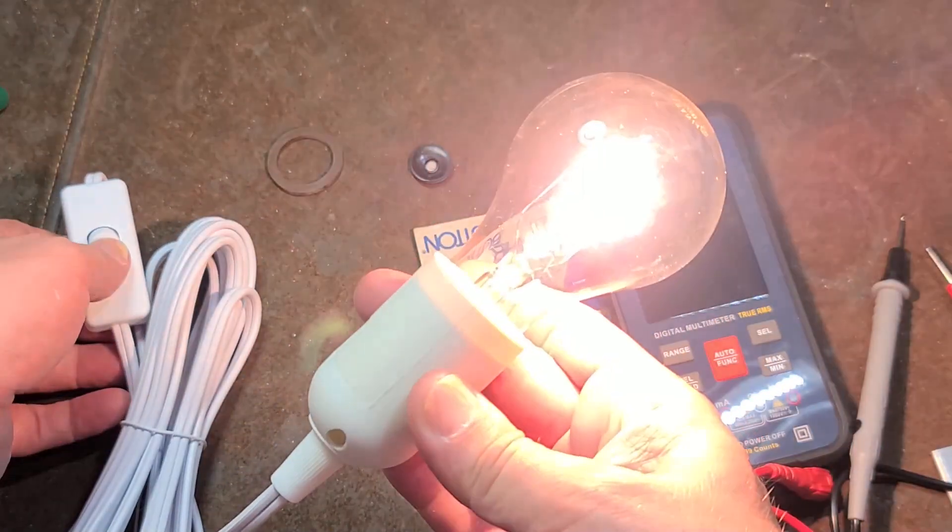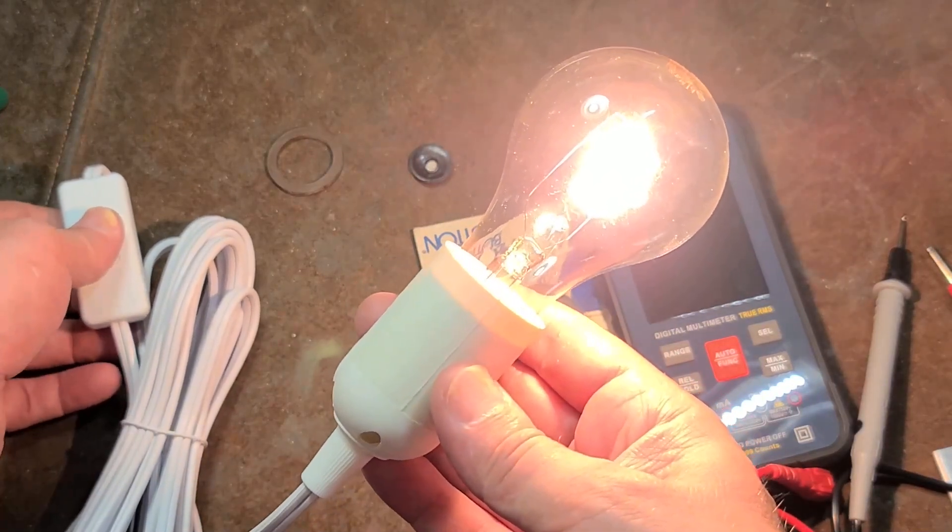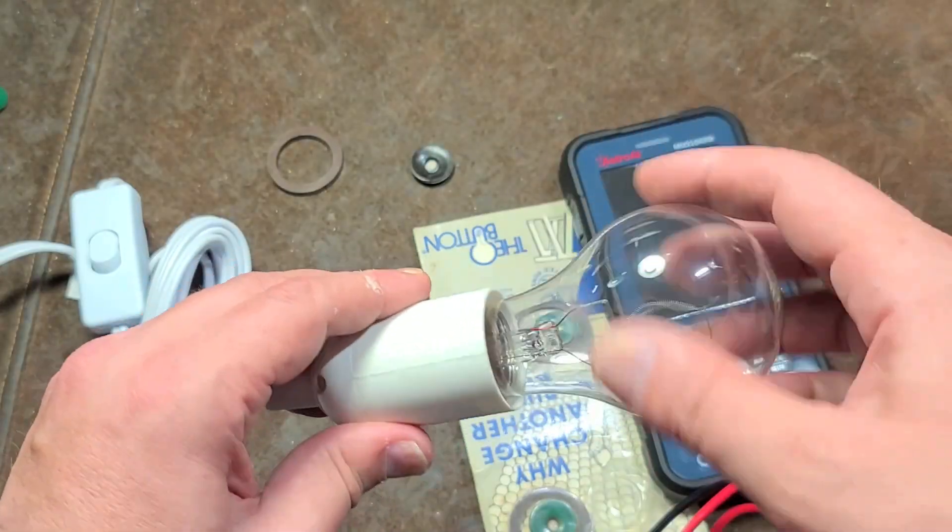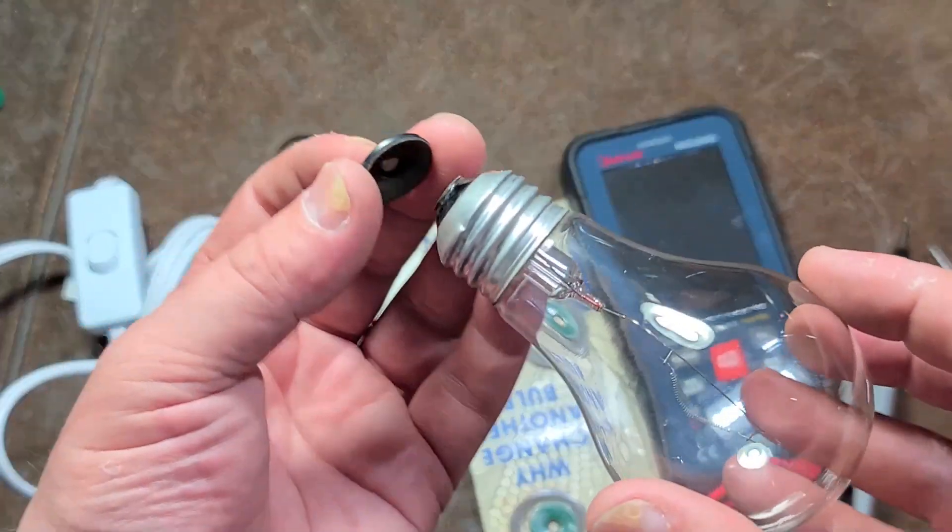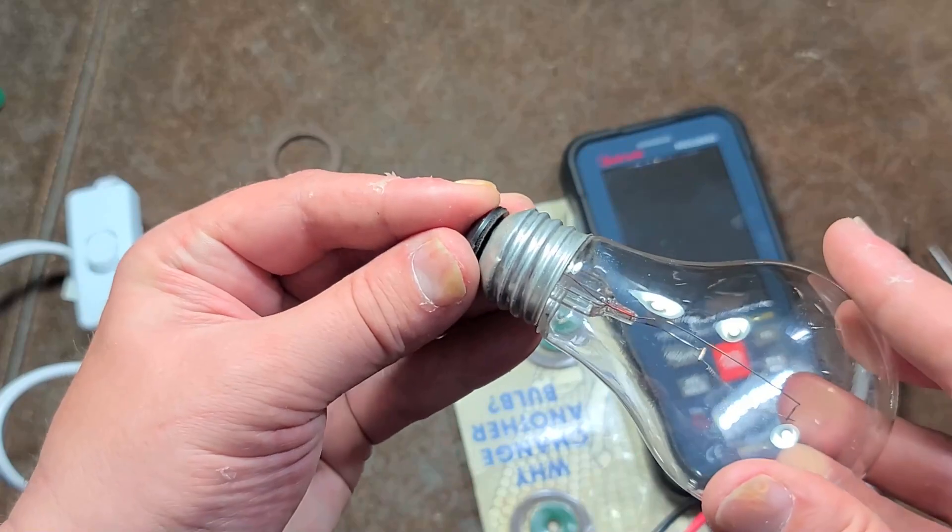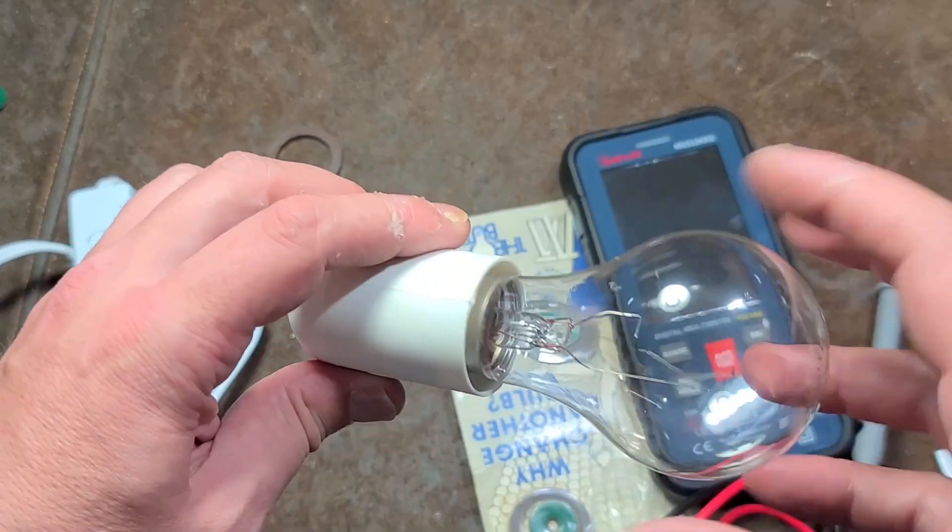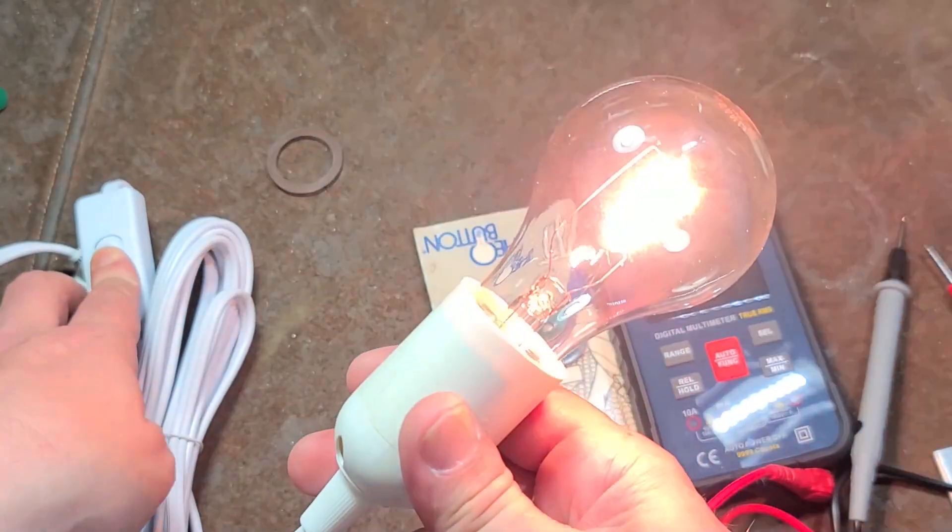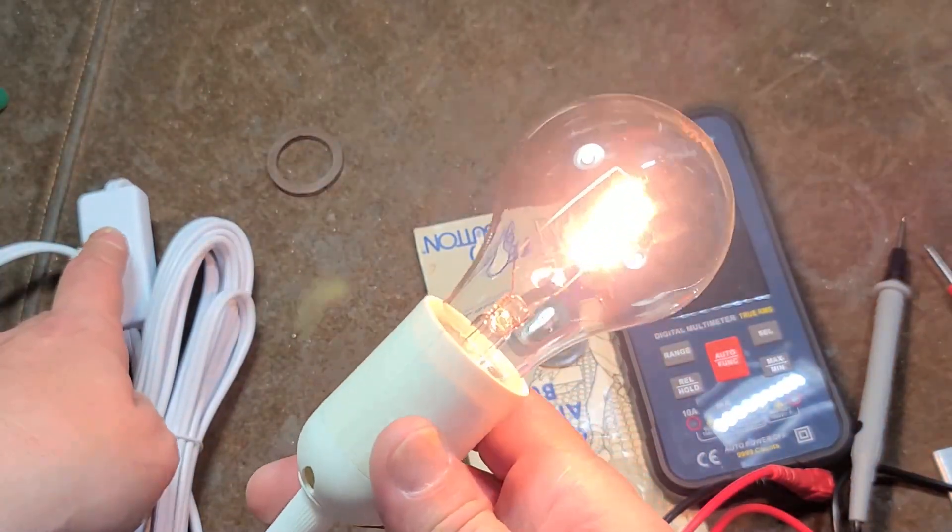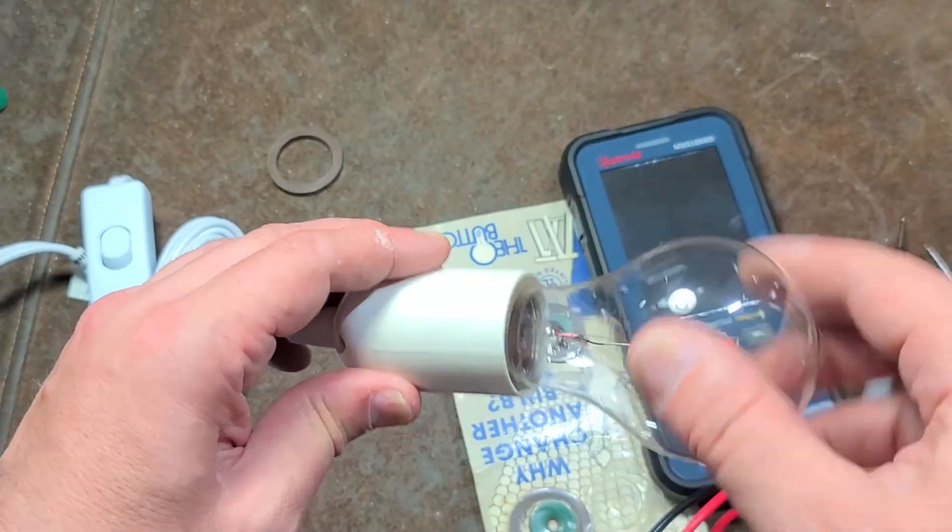Now if we connect this again, we can obviously see how much brighter it is and it's a bit whiter. We'll go back again to our little diode. We don't need to use that rubber ring, I think it's once again just to help prevent corrosion of the contacts. There's our diode. And we can see it's much yellower and a whole heck of a lot dimmer.